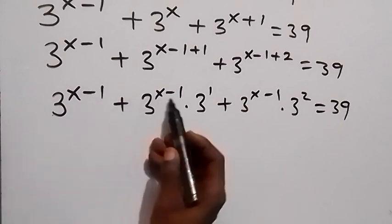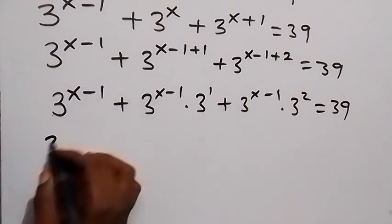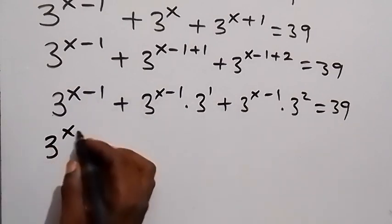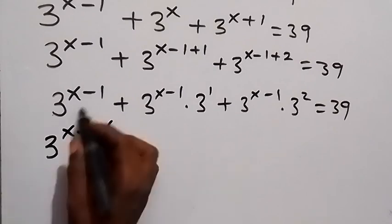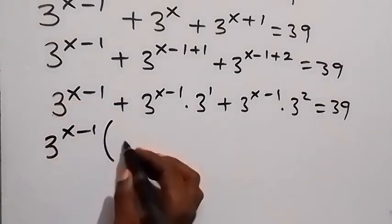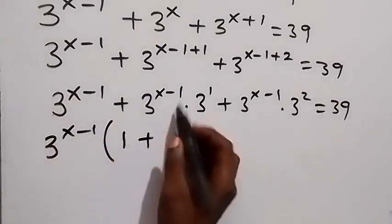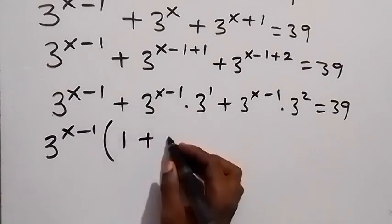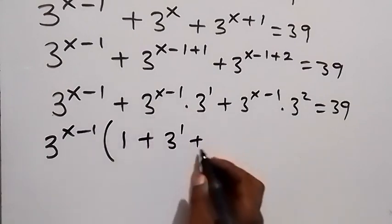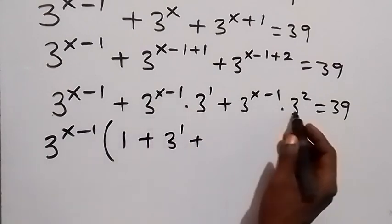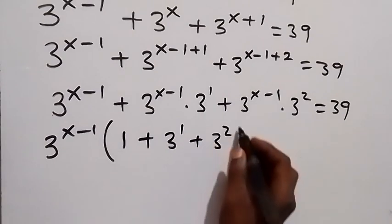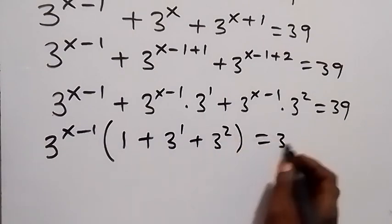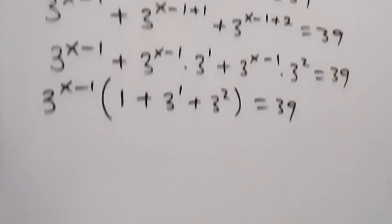In the next step, we factor out 3 raised to power x minus 1 as common. Taking it out, what is left is 1, plus 3 raised to power 1, plus 3 raised to power 2, all equals to 39.